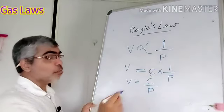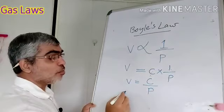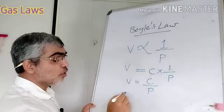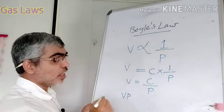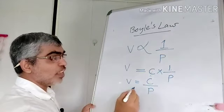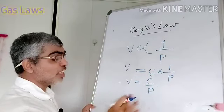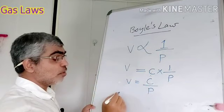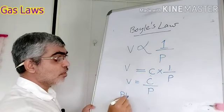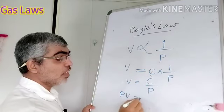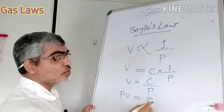If we cross-multiply, then P times V equals a constant. So P into V — PV — equals C.